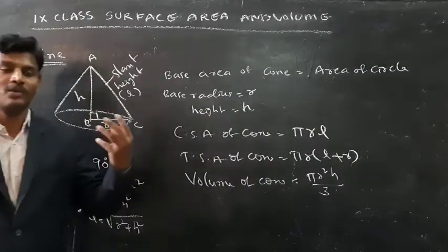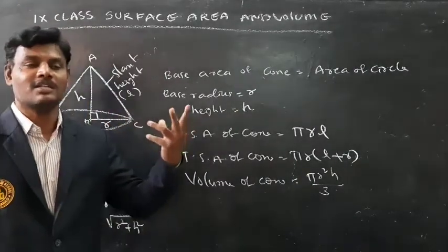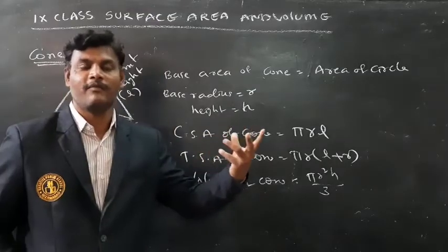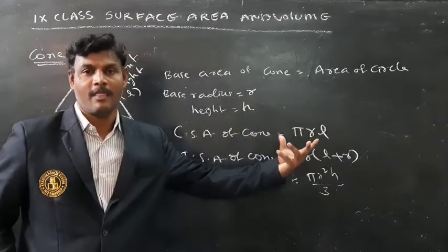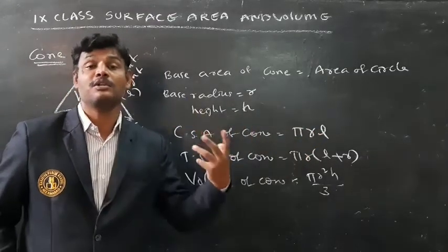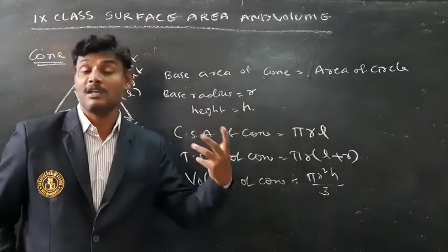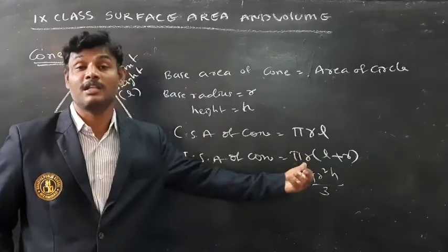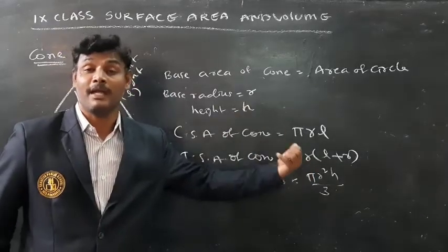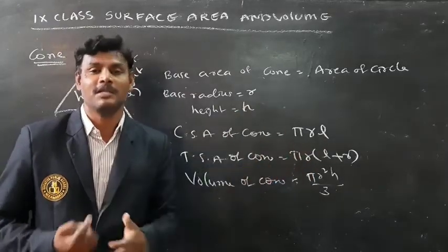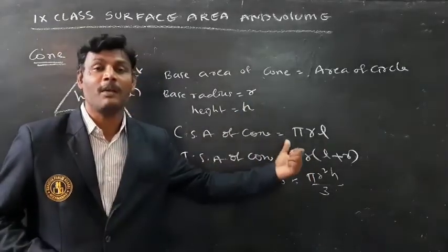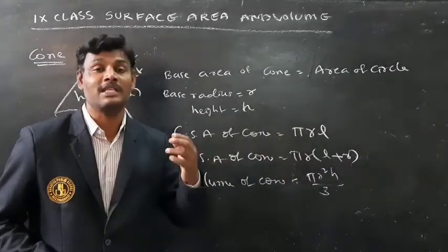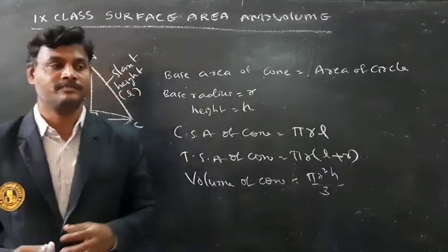What is the formula to find the curved surface area of a cone? It is πRL. Next, total surface area of a cone is πR(L + R). Next, volume of the cone is equal to πR²H by 3.